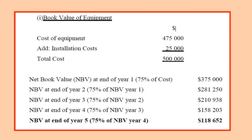Part A requires us to calculate the book value of the equipment. First we need to find the cost: $475,000 plus installation of $25,000 gives a total cost of $500,000. This is what gets depreciated to find the book value. There are two ways to calculate it: you can take 75% — that is the remaining book value — and you get $375,000 in the first year, or you can take 25% of $500,000 and subtract it from $500,000 to still arrive at $375,000.